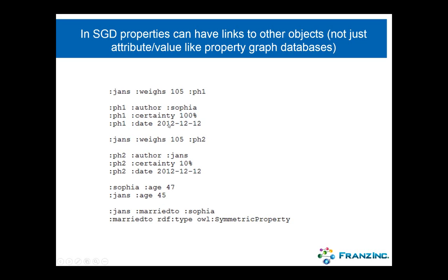Sophia is 100% certain, and she made the statement on a particular day. Then we can take the same statement and give it another property handle, where the author is Jans, who is only 10% certain that he's 105 kilos, and he made the statement on the same day. You can see that Sophia and Jans are objects themselves because they have their own properties, and Jans is married to Sophia. Because I want to be able to query in both directions, I can tell the database that 'married to' is of type symmetric property.